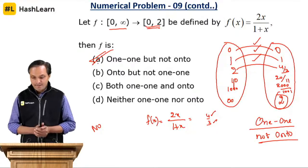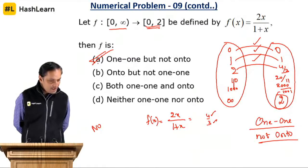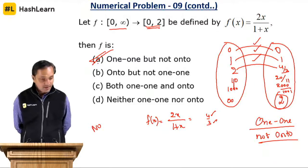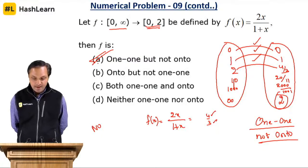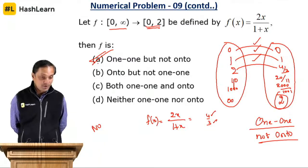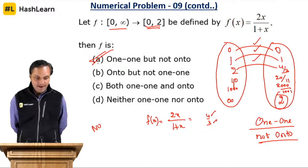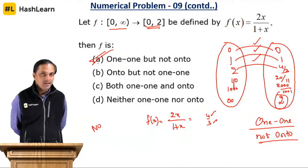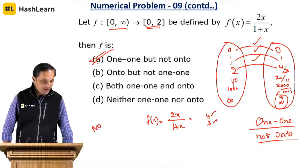Is that okay, students? Ninth one is C — no, it is not C, because the value 2 has no preimage. So that option is wrong. Fine then — any doubts, Ananya and Amit? Is the concept clear for problem 9? Kindly respond yes or no.